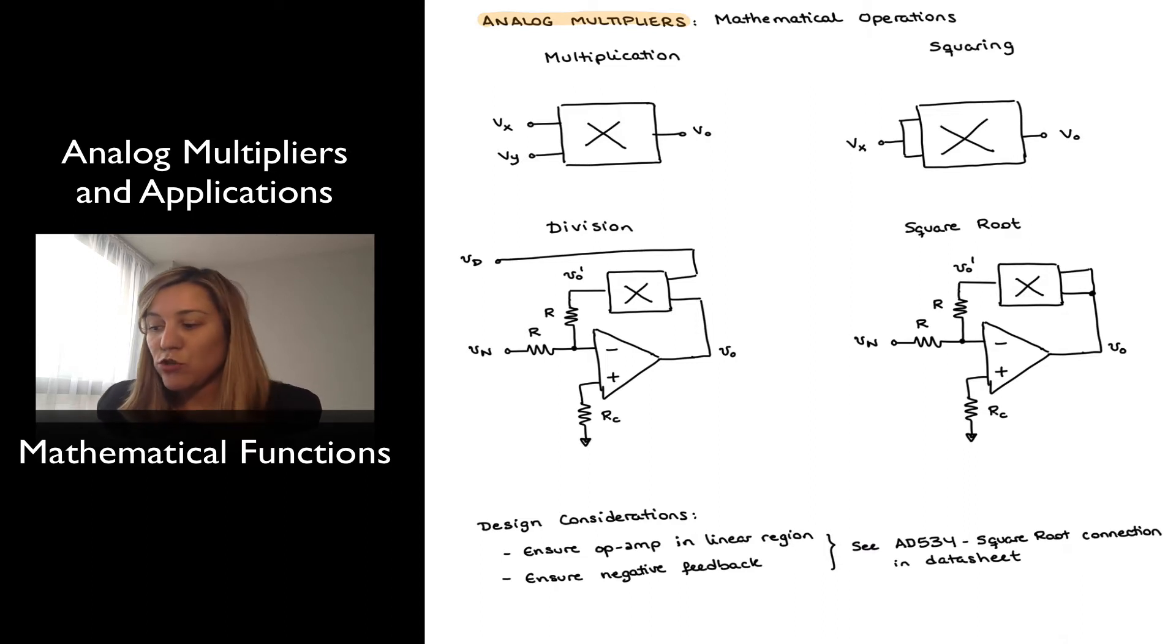The multiplication operation will be the simplest one to implement, because this is, after all, an analog multiplier. It just consists of connecting the multiplier with the two inputs, and the output will be proportional to the product of the inputs. So the product of the inputs times the scaling factor k, which is going to be dependent on the particular configuration of the multiplier.